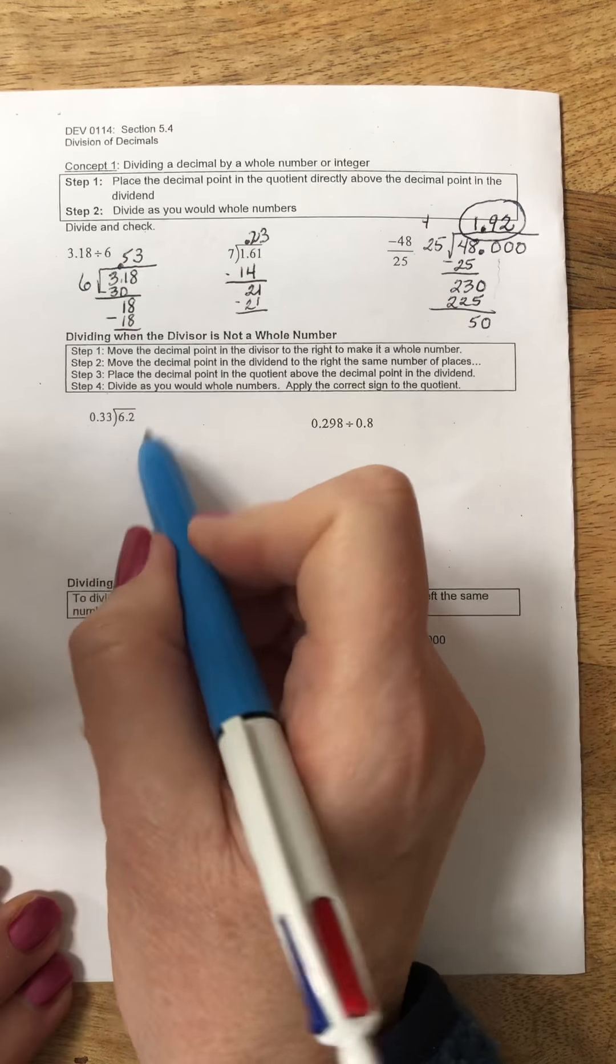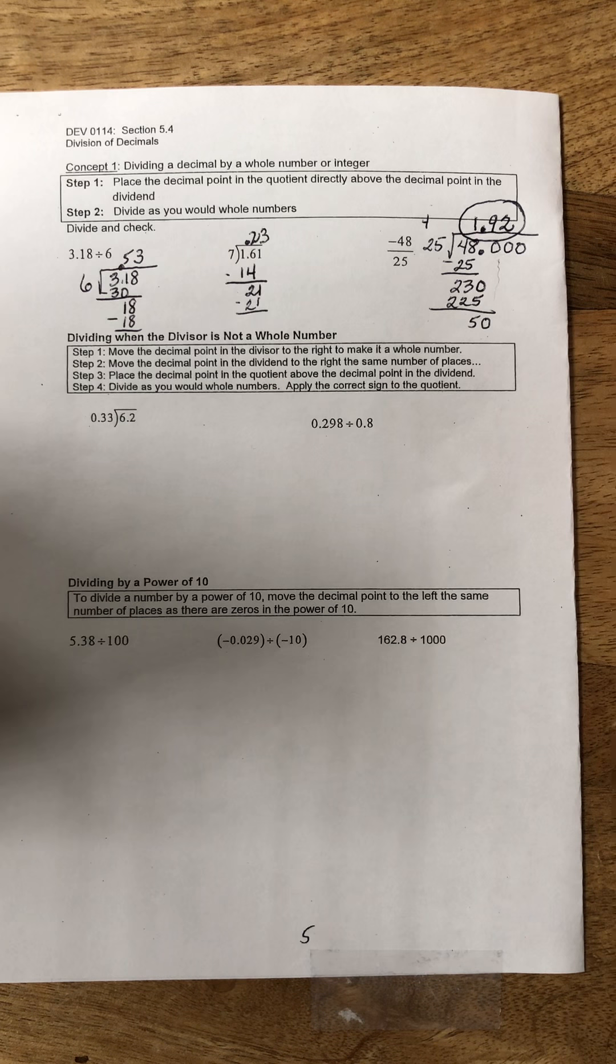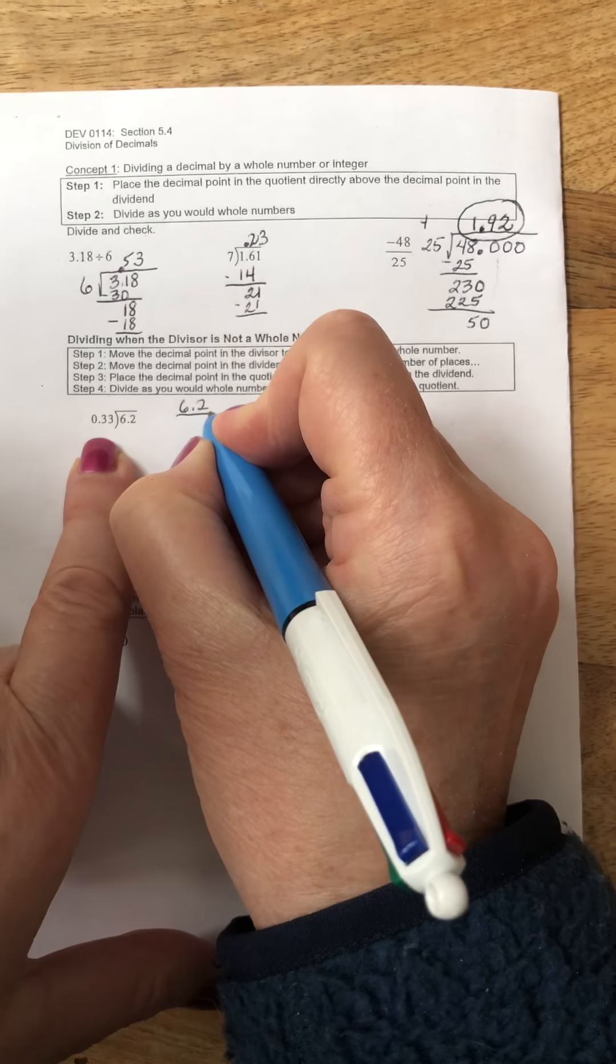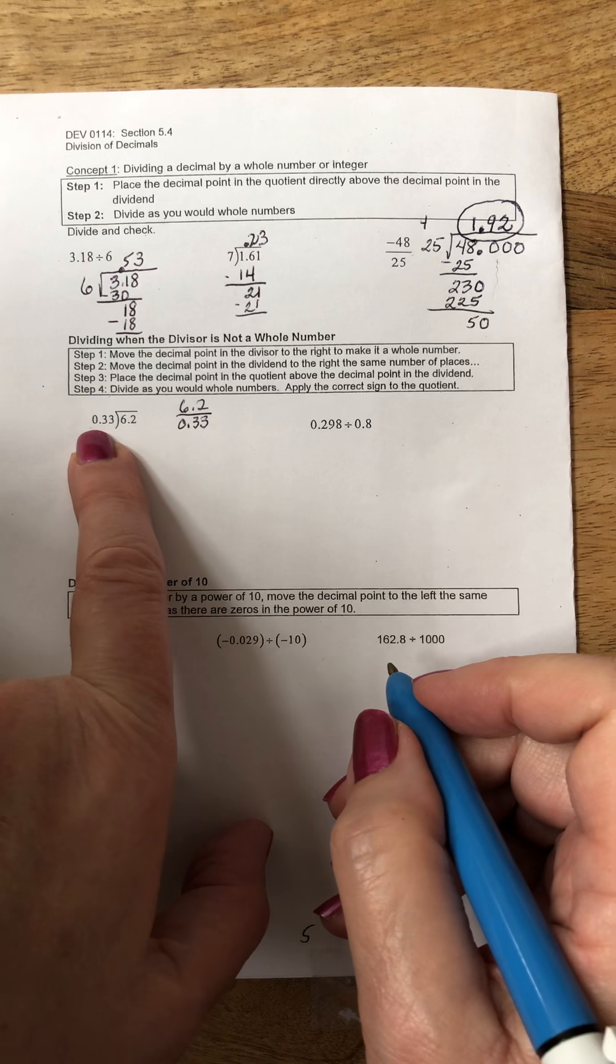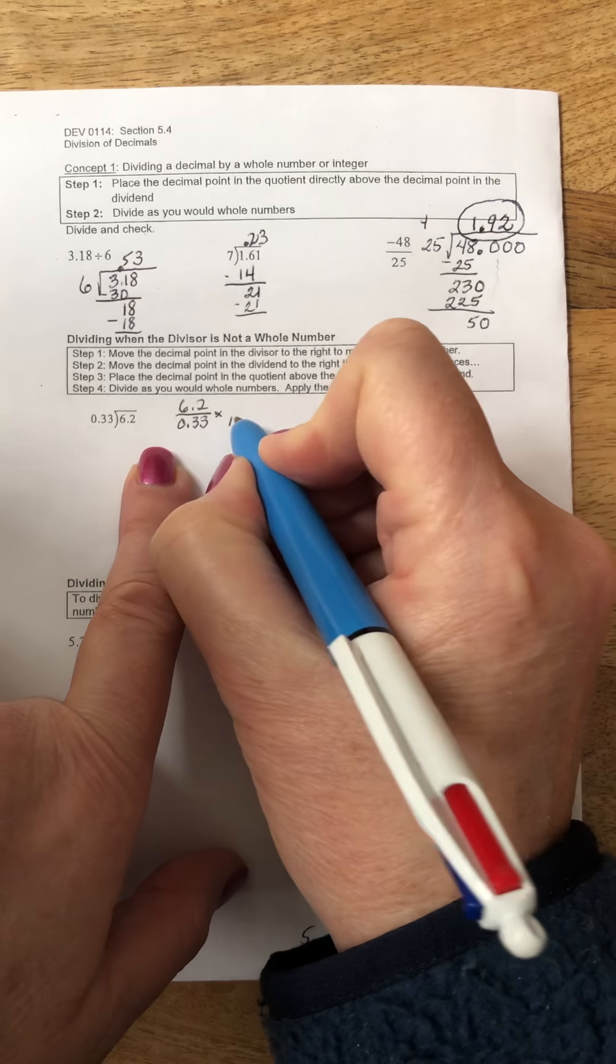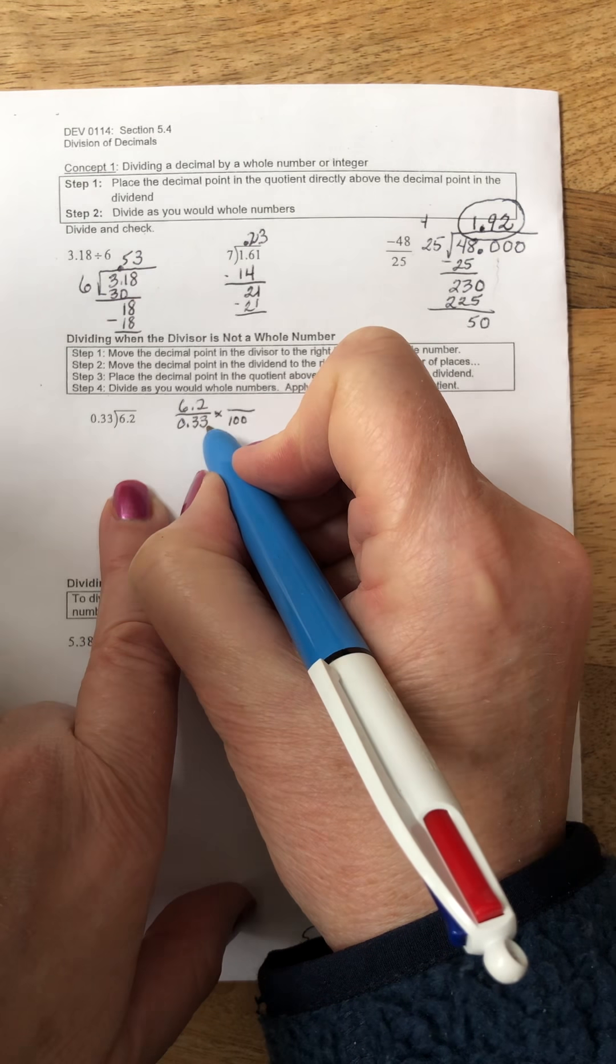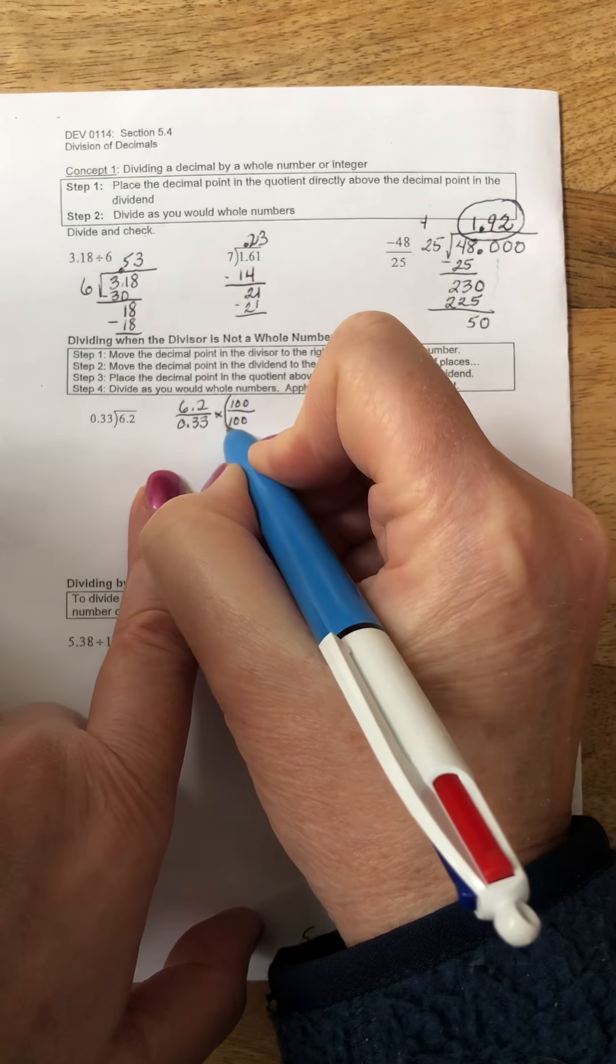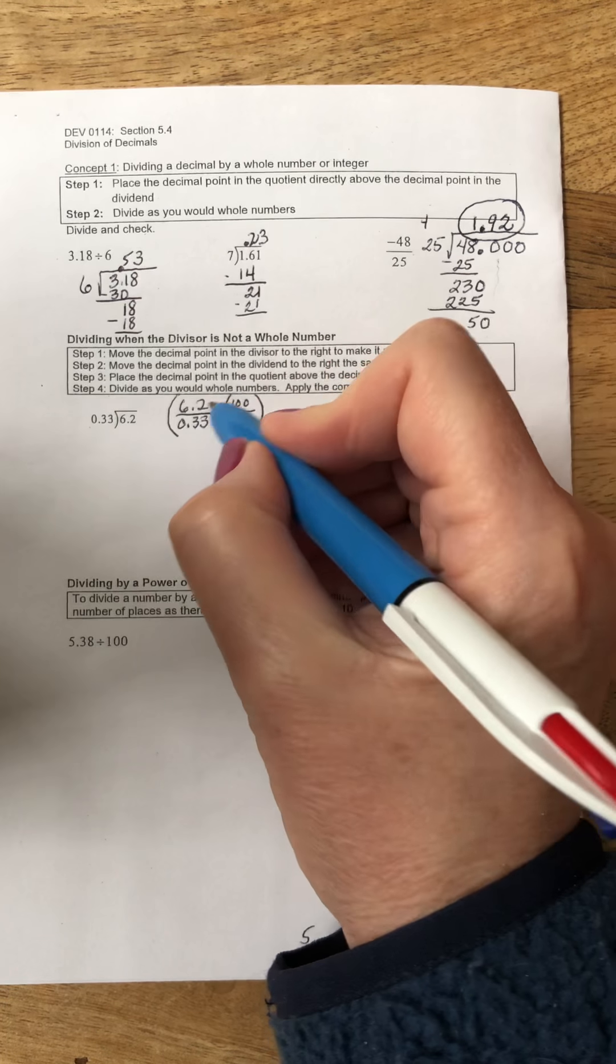In this next example, we have a decimal point in the divisor and that's not going to work out for us. If we take 6.2 divided by 0.33 and look at it as a fraction, we do want our divisor to be a whole number. Recall from the last section if I multiply by 100, that's going to move this decimal point two places to the right, giving me the whole number 33.